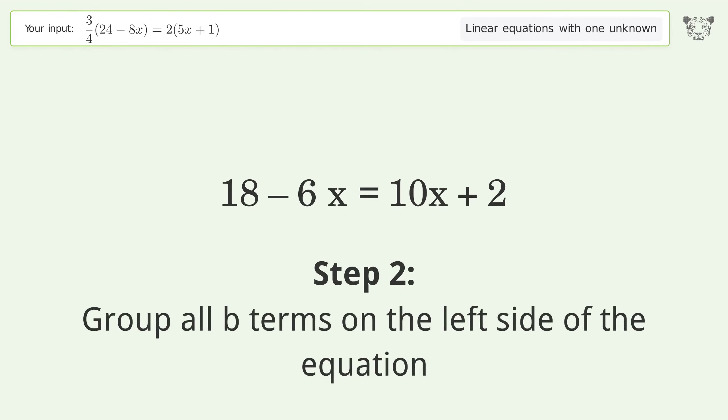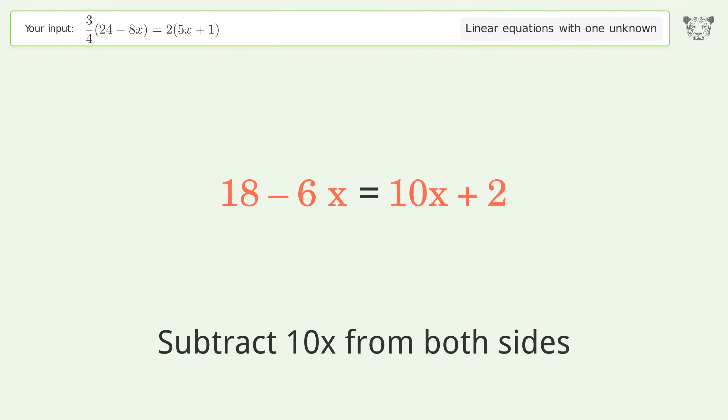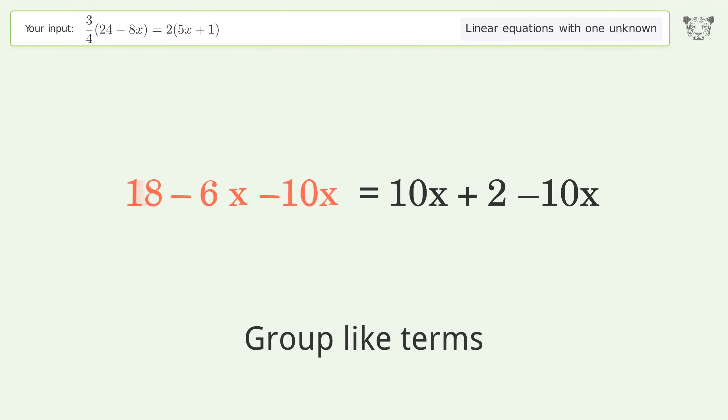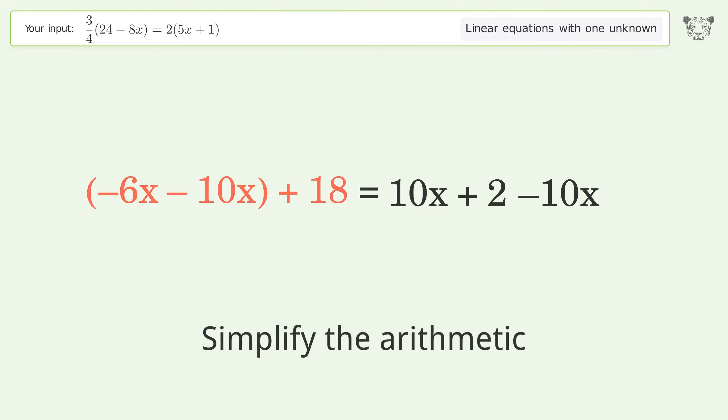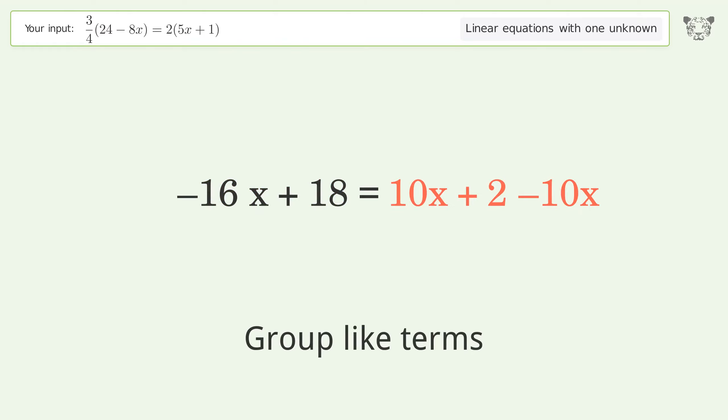Group all variable terms on the left side of the equation. Subtract 10x from both sides. Group like terms and simplify the arithmetic.